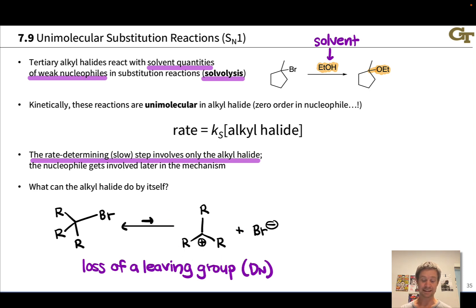Now, this is still a relatively disfavored step, because we're going from a neutral starting material to two charged products, which is what makes it slow. But nonetheless, this can occur to a small degree, and we get a small but non-negligible concentration of carbocations in these solvolysis reactions.